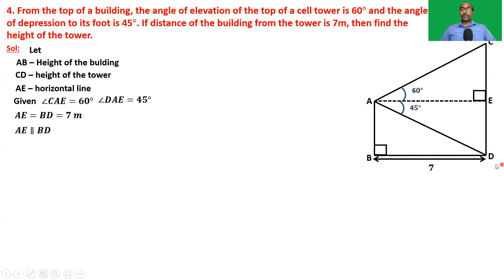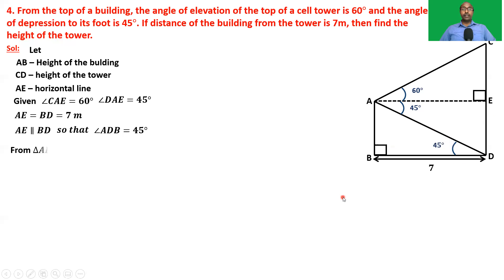Since AE is parallel to BD and AD is a transversal, the alternate angles are equal, so angle ADB = 45 degrees. We cannot directly find CD. First we find ED, then CE, and by adding both CE and ED we get the height of the tower. So first find AB.